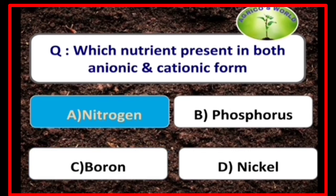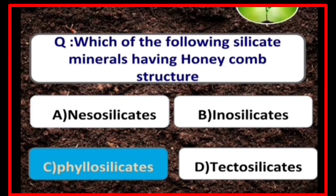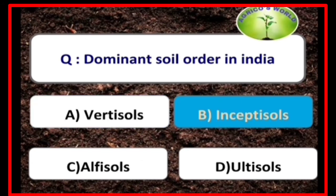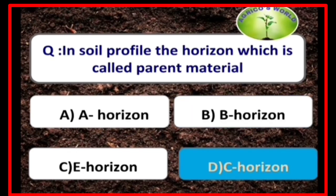Nitrogen is the nutrient present in both anionic and cationic form. Phyllosilicates have a honeycomb-like structure and are called sheet silicates. Dominant soils in India are alluvial soils, and the dominant soil order in India is Inceptisols. The dominant soil order in the world is Entisols. In the soil profile, the C-horizon is called the parent material.